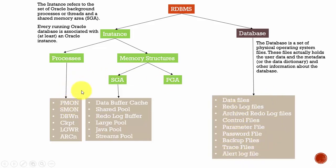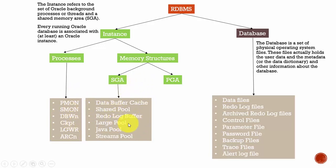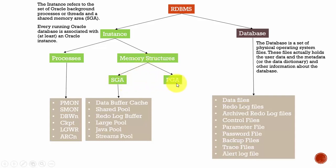To view or modify the data stored in these files, Oracle must start a set of background processes and allocate memory to be used during database operations. This set of background processes and the memory allocated by Oracle make up an instance. So an instance is nothing but a set of background processes and the memory structures which constitute the Shared Global Area and the Program Global Area.